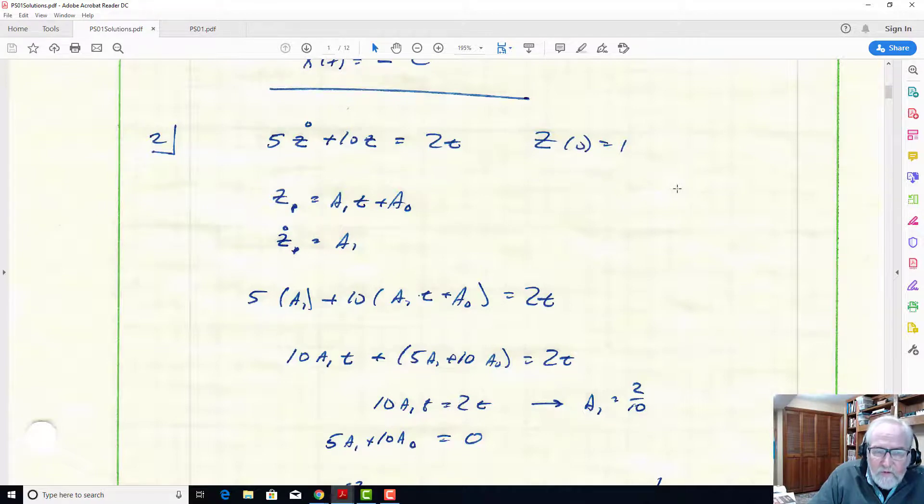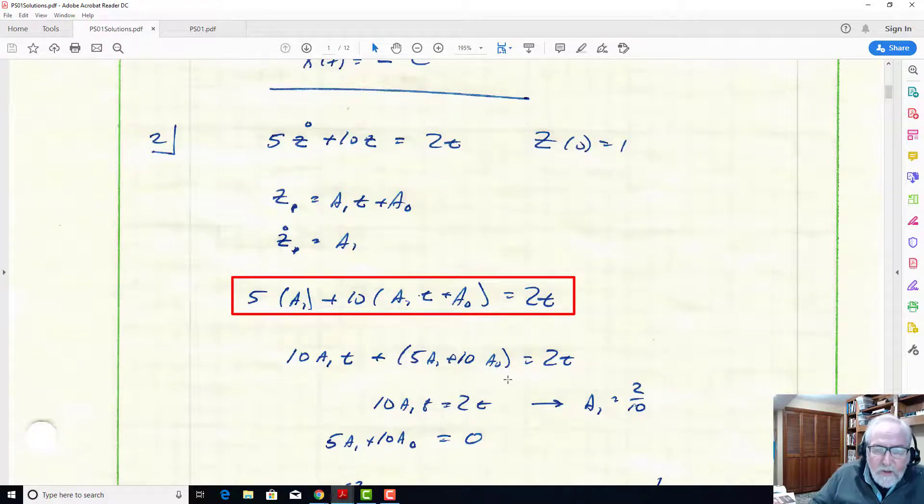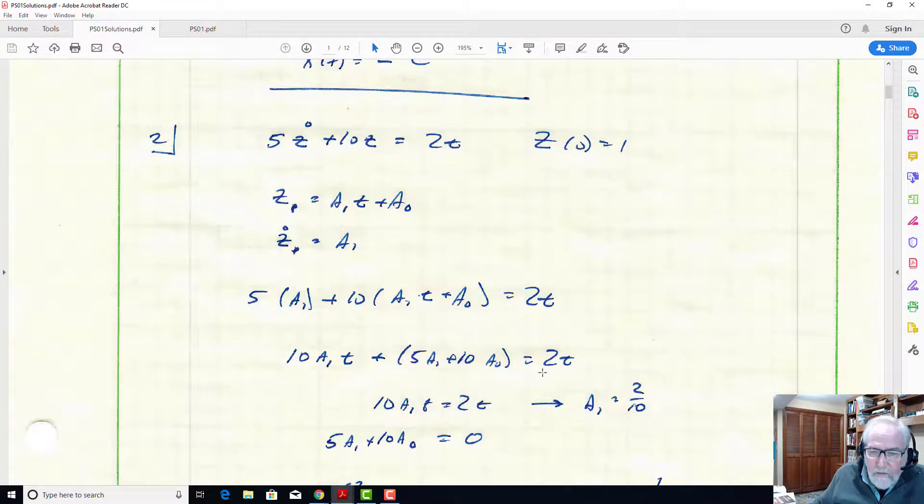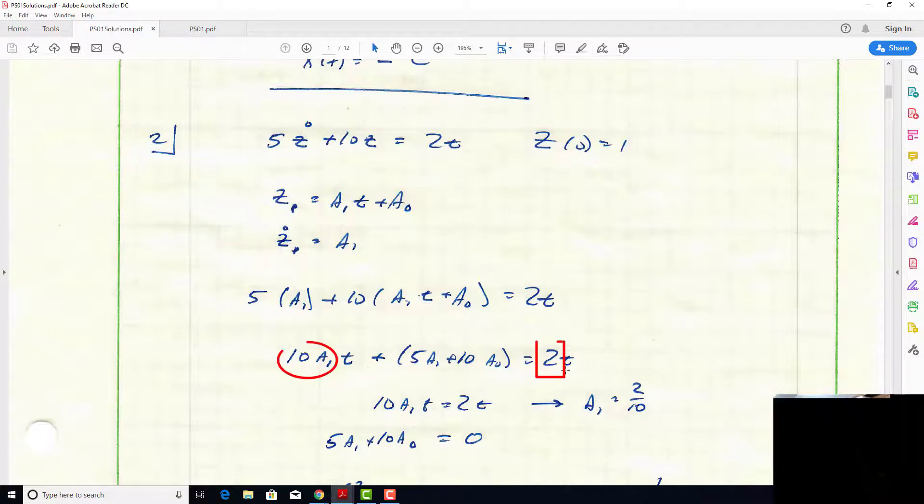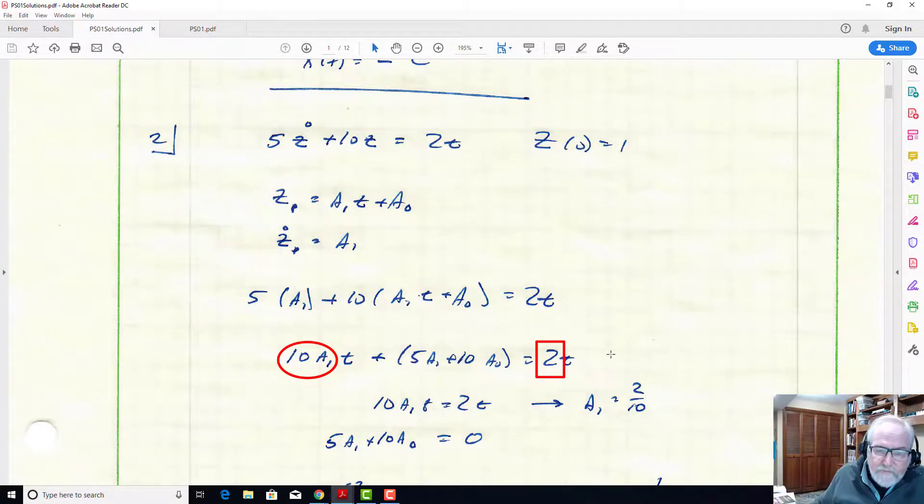So now we substitute those two functions into the original differential equation and solve for a1 and a0. There's that substitution, and now I've gathered the terms of the polynomial in time. There's a single term in front of t and this combination of terms becomes the constant, and we compare that to the polynomial that is the forcing function. So we see the 10*a1, the coefficient of t, has to be the same as 2.